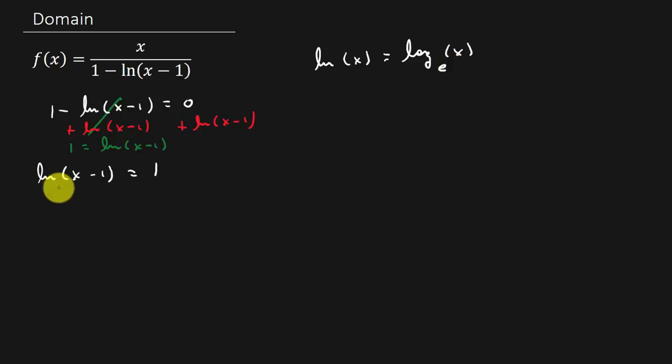Remember, it's understood that there's a log and that's a base e. So if you remember how to convert that, that's going to be e to the first. It's whatever the base is. It's understood that's log base e. So it's the base raised to this number equals the x minus 1. And so here we get x is equal to e plus 1.